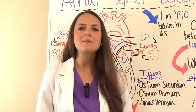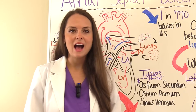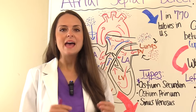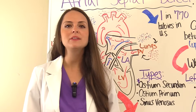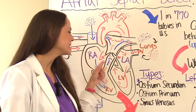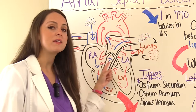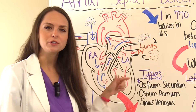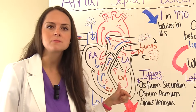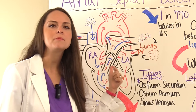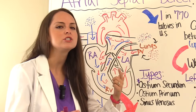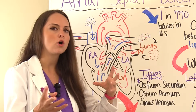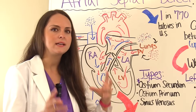Now let's quickly talk about the different types of ASDs. The type really depends on where that hole is located within the atrial septum. When you're studying for exams, try to remember the location of the hole based on what type it is.